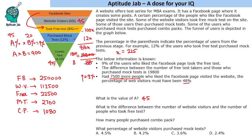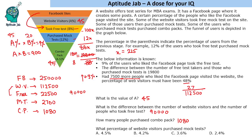Now answering the questions: A equals 45. The difference between website visitors and free test takers is 1,12,500 minus 22,500, which equals 90,000. The number of people who purchased the combo pack is 1,080. For the percentage of website visitors who purchased the mock test, we have 2,700 divided by 1,12,500 into 100.